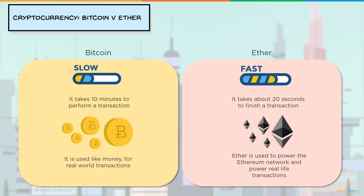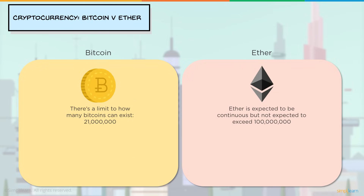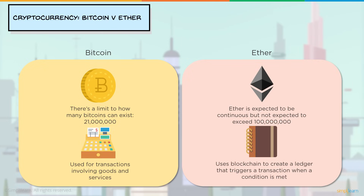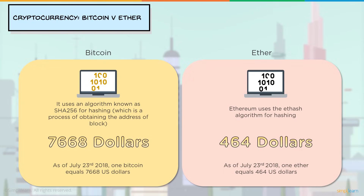Bitcoin is used like money for real-world transactions, while Ether powers the Ethereum network and real-life transactions, acting as fuel within it. There's a limit of 21 million bitcoins, expected to be reached by 2140. Ether is expected to not exceed 100 million units. Bitcoin uses SHA-256 for hashing while Ethereum uses ETHash. As of July 23rd 2018, one Bitcoin equals $7,668 and one Ether costs $464.